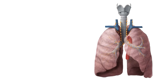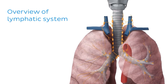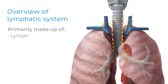First, we need to answer a question: what is the lymphatic system? The lymphatic system is a huge network of tissues and organs which defend your body against disease-causing agents. We can think of it as a filtering system. It is primarily made up of lymph, which is the fluid that circulates throughout the lymphatic system.